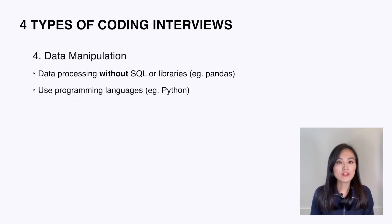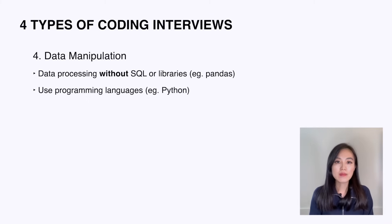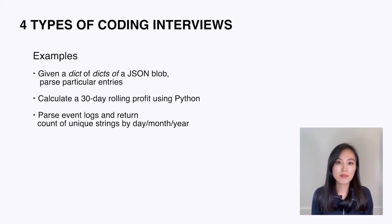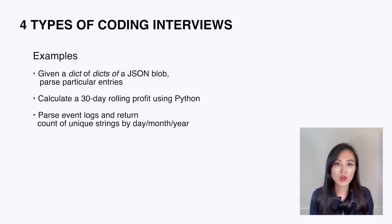The last type is what I call data manipulation questions, and they are not as common as the other types. They typically ask you to do data processing and transformations without using SQL or any data analysis library such as pandas — only a programming language like Python. Examples include: given a dictionary of dictionaries representing a JSON blob, do some basic parsing to extract particular entries; calculating a 30-day rolling profit using Python; parsing event logs and returning the count of unique strings by day, month, or year.